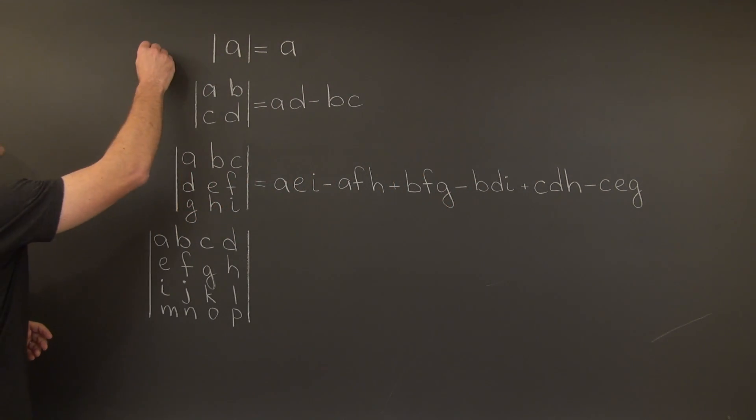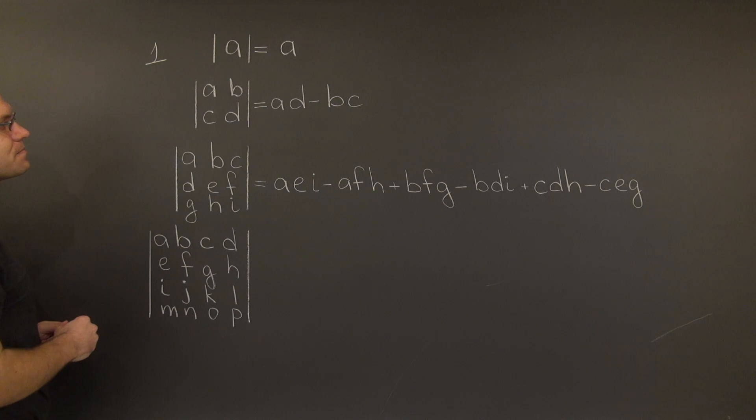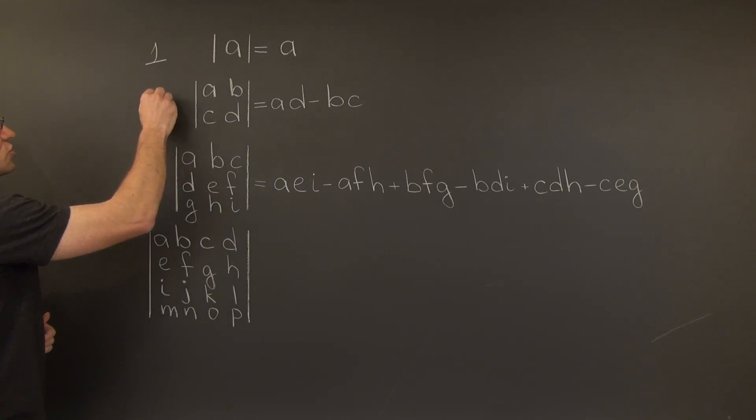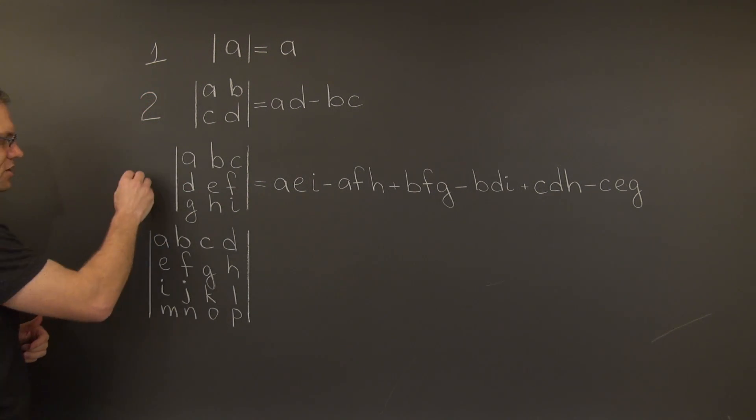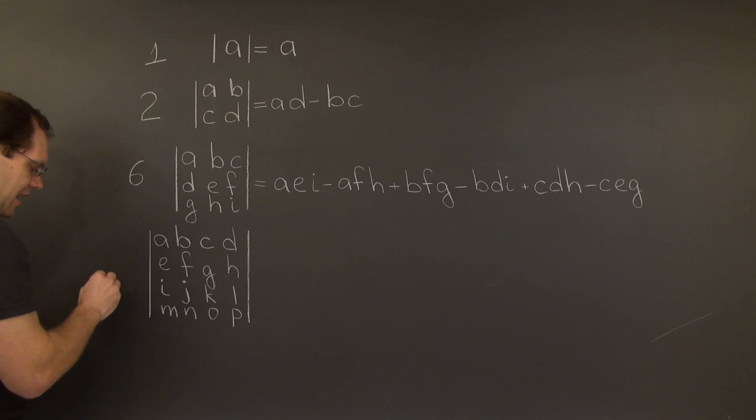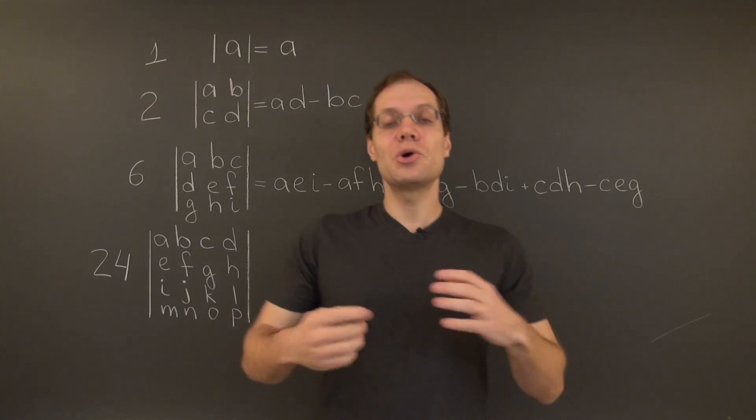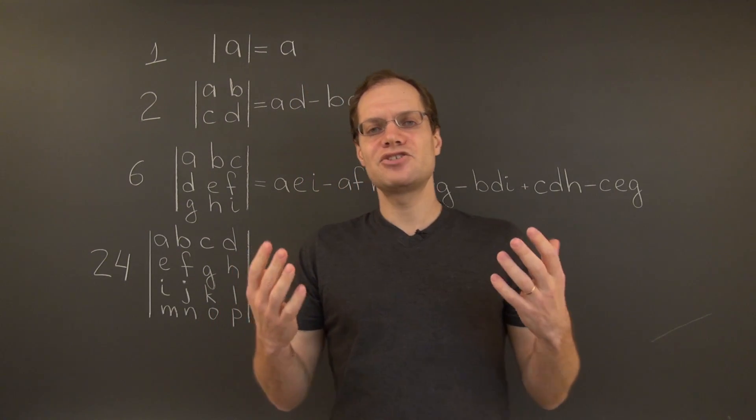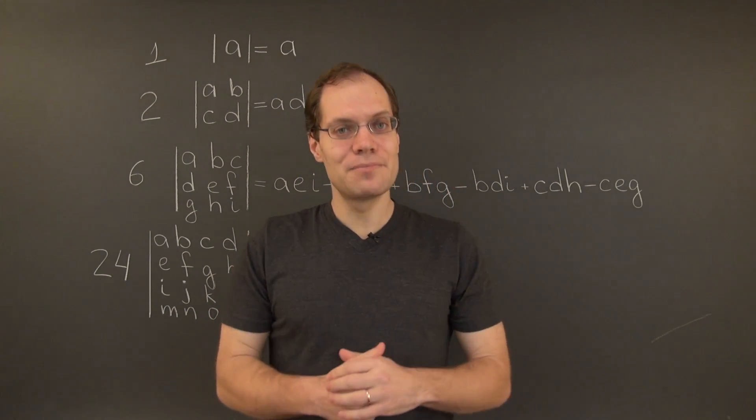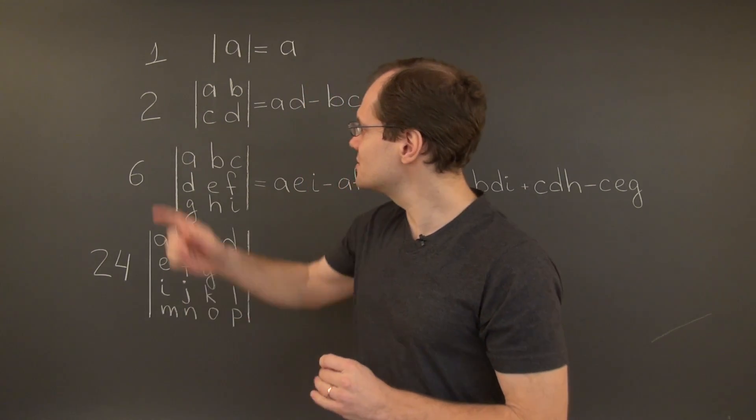The 1x1 determinant has a single term in it. The 2x2 determinant has two terms in it. The 3x3 is six. And the new 4x4 case has 24 terms in it. And I think we recognize this sequence. It's the factorial sequence, n factorial, the product of numbers from 1 to n. This is 1. This is 1 times 2.